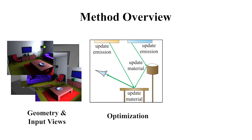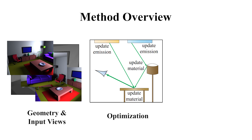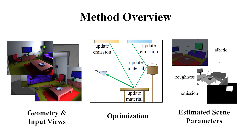We propose a stochastic gradient descent step which then updates the material and emission parameters. This procedure is repeated until our rendered images match the images given as input.